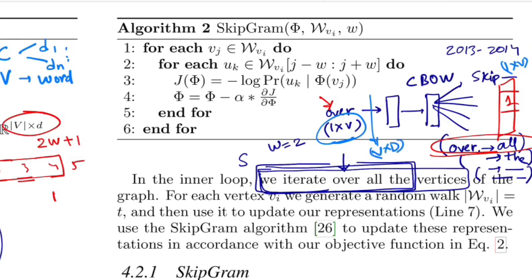If you multiply both of these, you'll be getting a 1 cross D representation, which again multiplied by D cross V gives you 1 cross V, where V is the length of the vocabulary. Because we'll have to choose one of the words from the vocabulary that occurs in the context. So this is the full idea behind SkipGram.